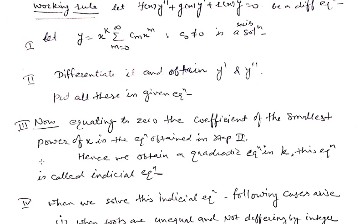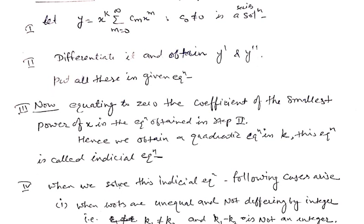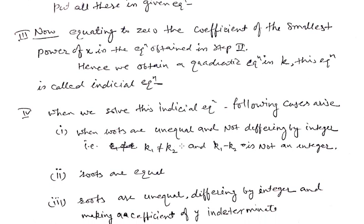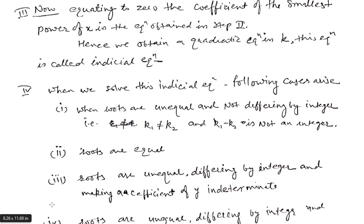We equate to zero the coefficient of the smallest power of x in the equation obtained. After putting the values of y, y prime, and y double prime in this equation, we equate the coefficient of the smallest power of x to zero. This gives us a quadratic equation in terms of k. This quadratic equation is called the indicial equation. We find the roots of this indicial equation, k1 and k2, and on the basis of these values we decide four cases.